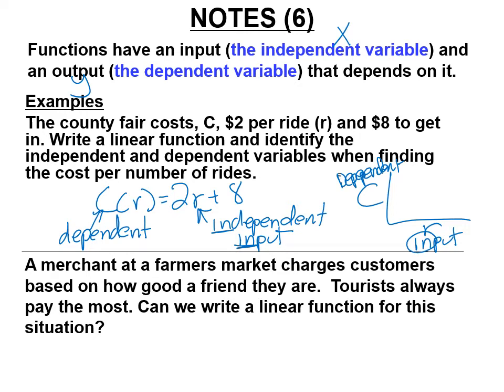A merchant at a farmer's market charges customers based on how good a friend they are — friends pay less, tourists pay the most. Can we write a linear function? No, because the price doesn't depend on how much people buy. It depends on friendship, which we can't graph. So the cost is not a function of the number of apples purchased.